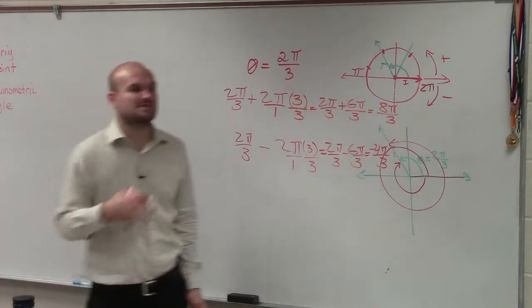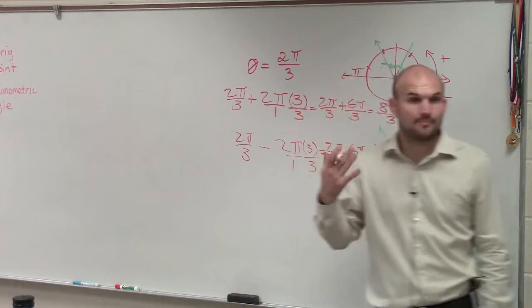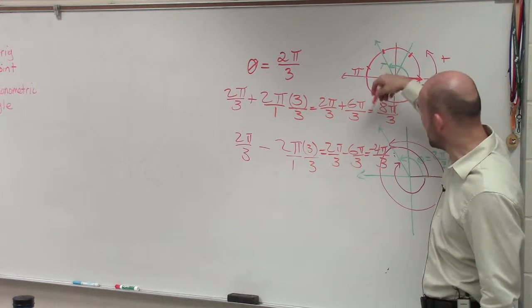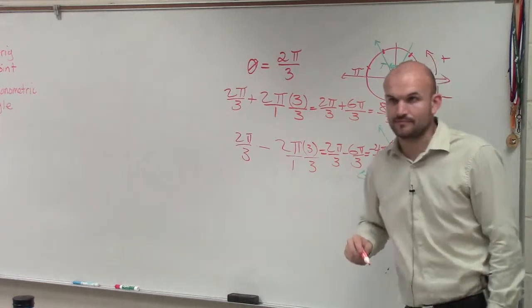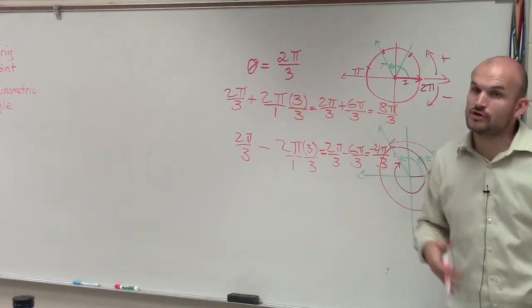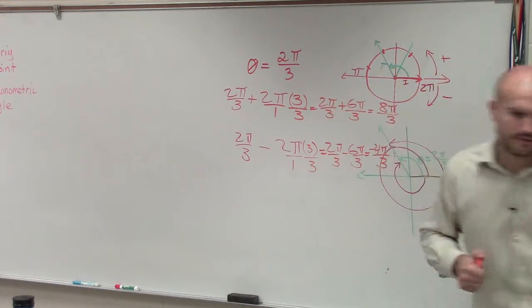Now the question in your homework says, determine a positive and a negative coterminal angle. Now I have provided you two angles that have the same initial and terminal side, one positive and one negative. So you can add 2 pi and you could subtract 2 pi, and those are both going to give you coterminal angles.